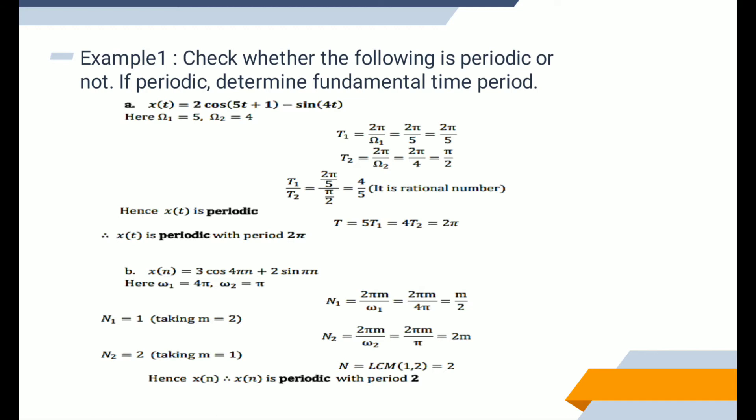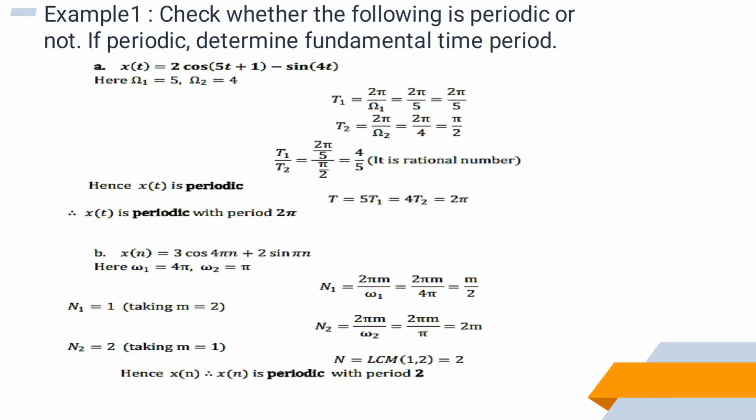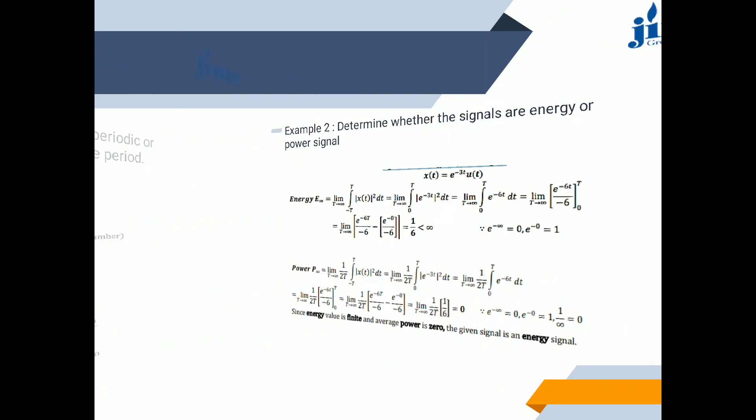Next: x(n) = 3cos(4πn) + 2sin(πn), where ω₁ = 4π and ω₂ = π. N₁ = 2πm/ω₁ = 2πm/4π = m/2. Taking m = 2 gives N₁ = 1. For the second term, N₂ = 2 taking m = 1. Hence x(n) is periodic with period 2.